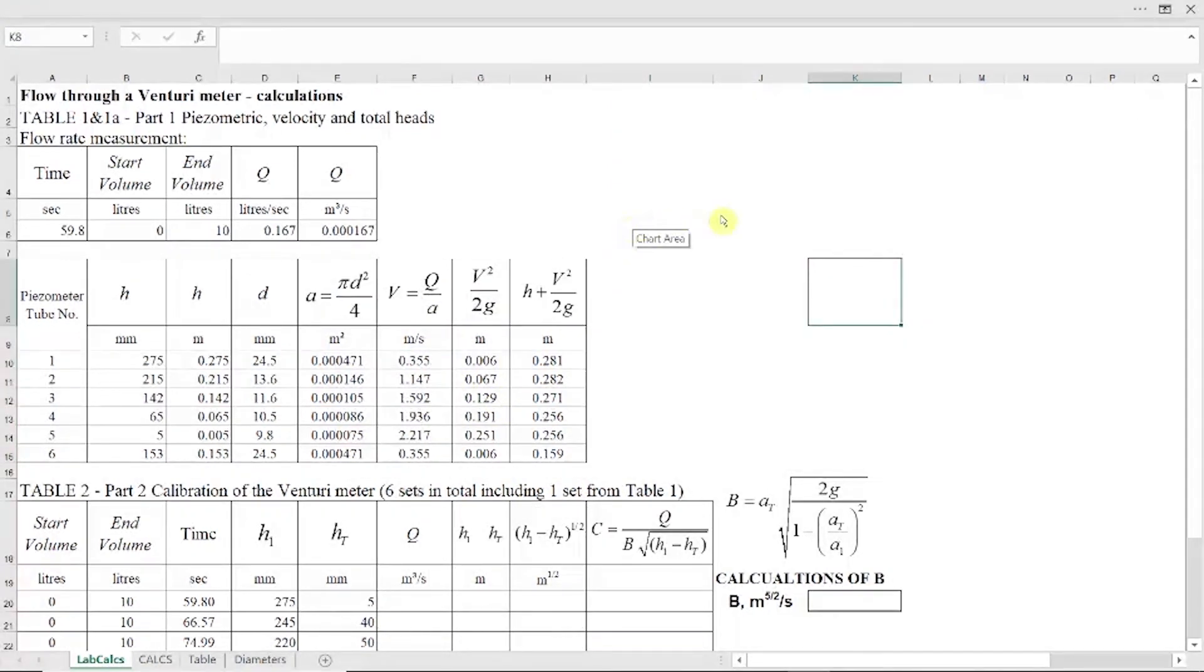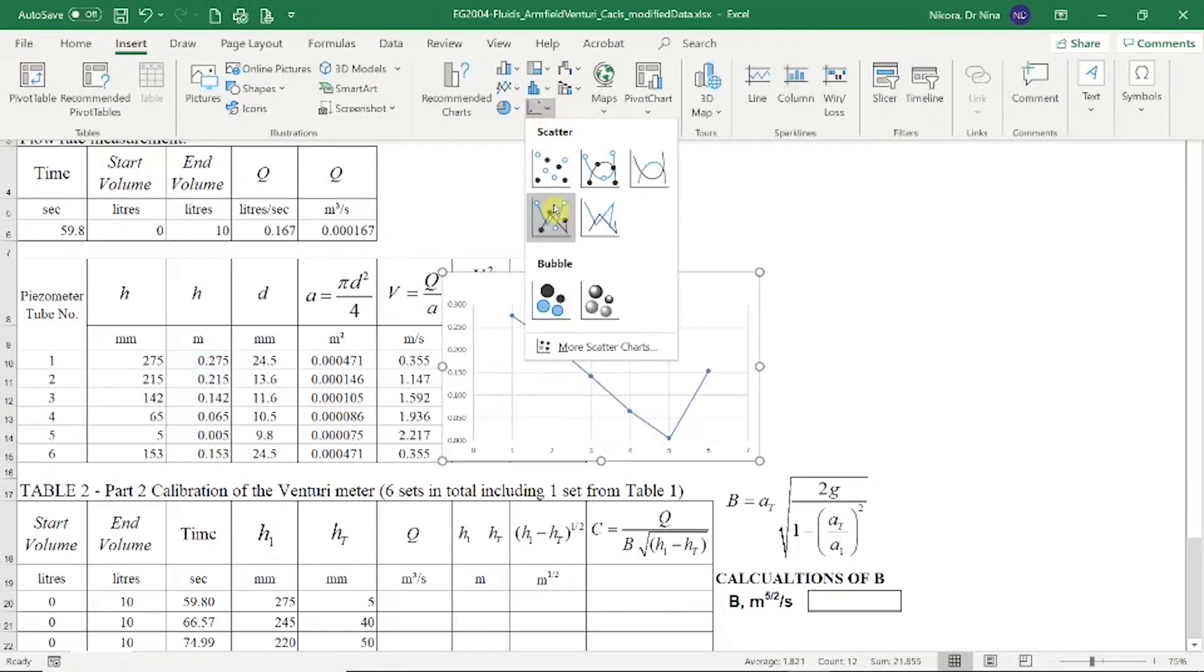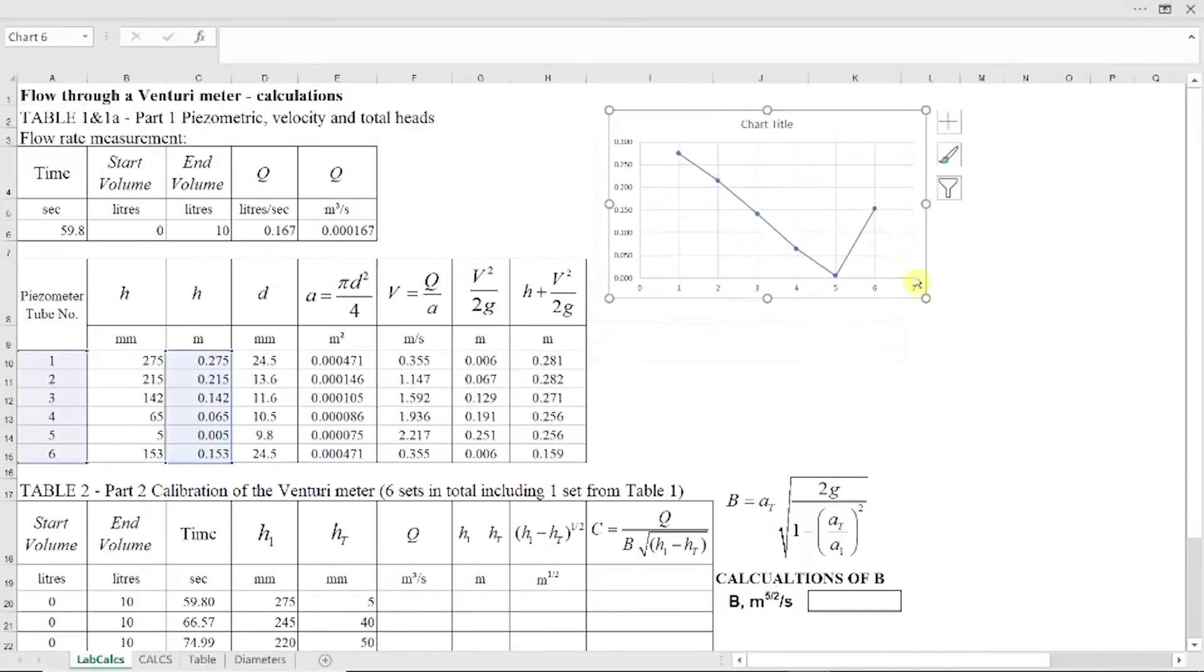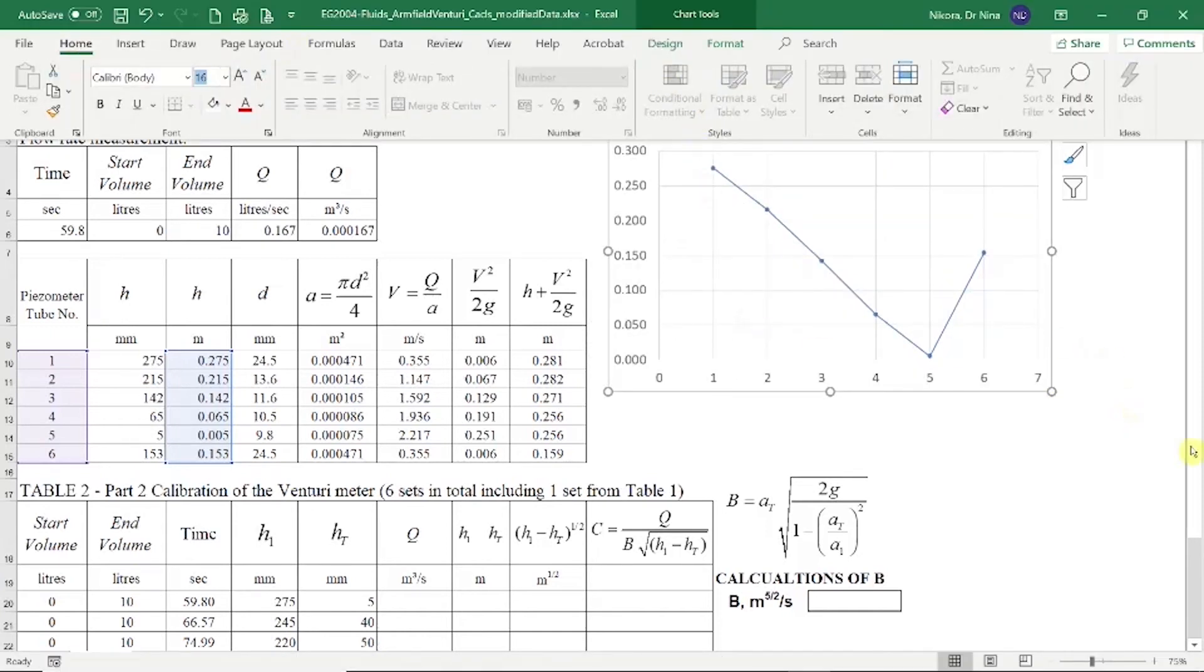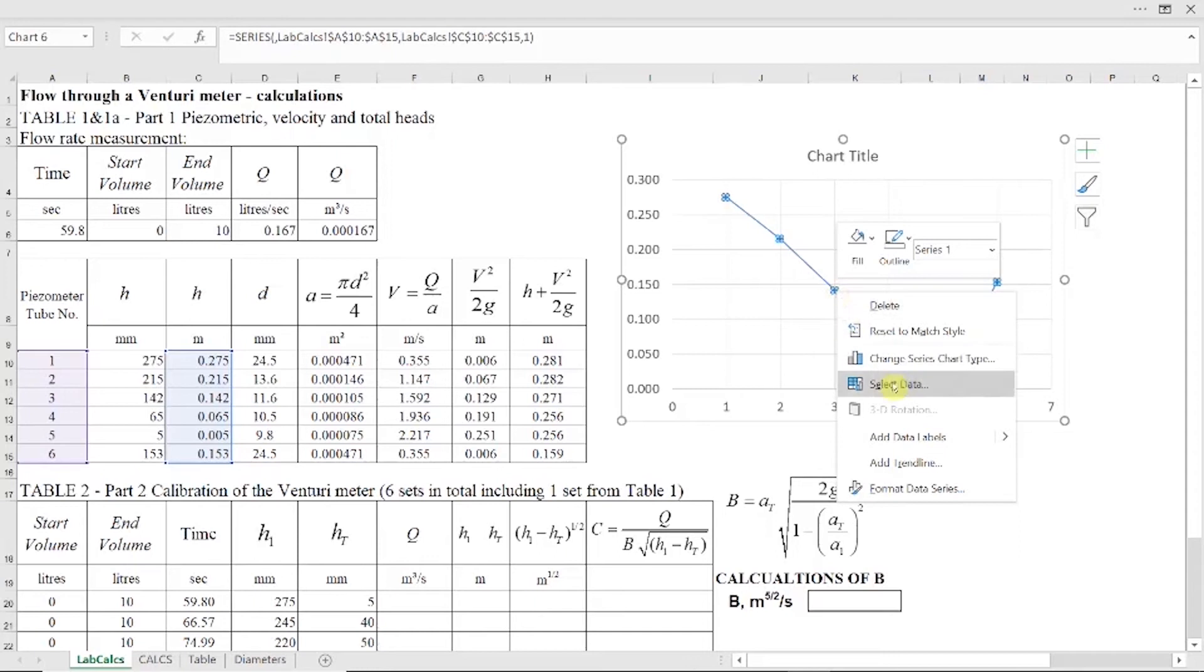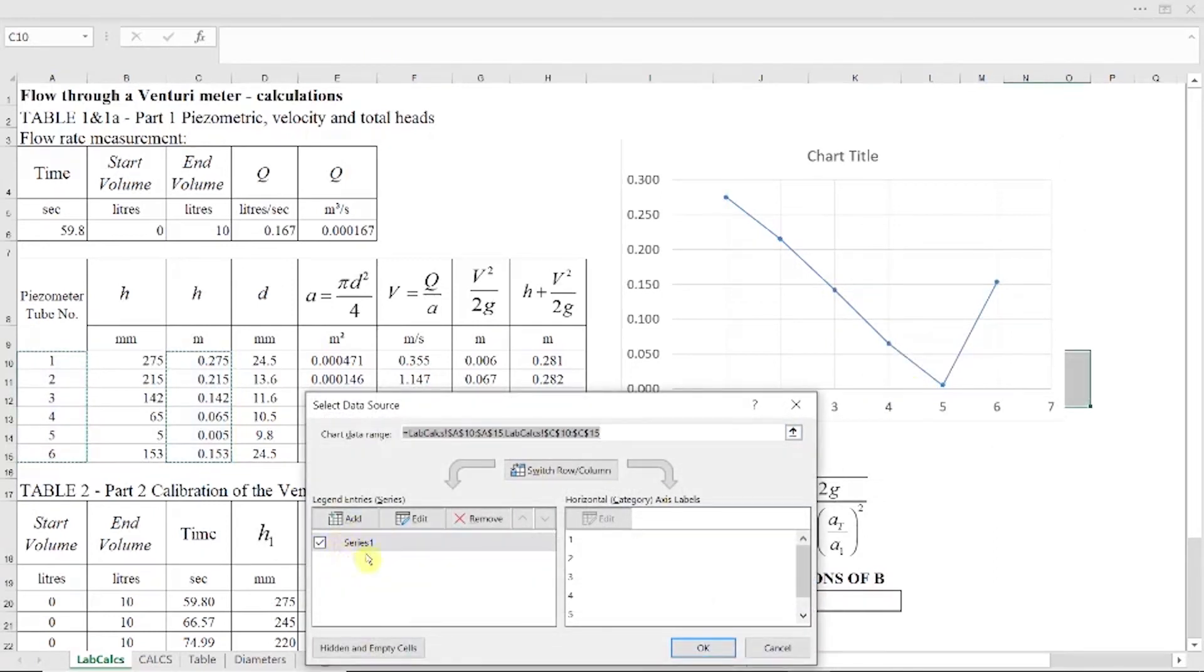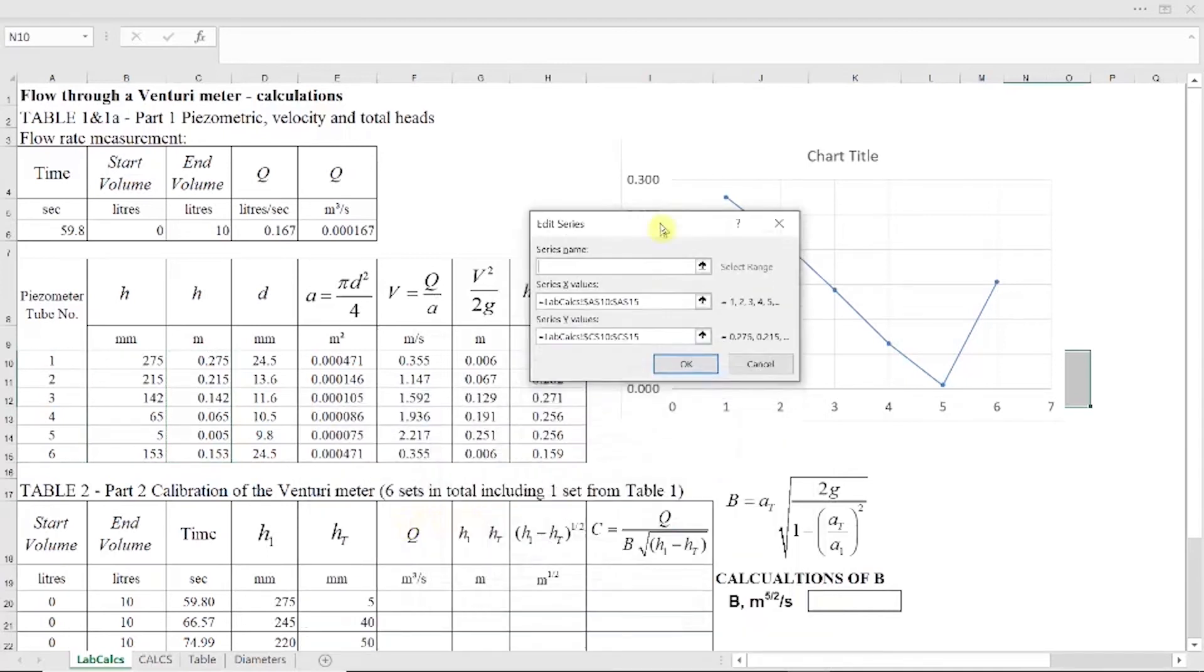Now we need to plot variation of piezometric velocity and total heads along venturi meter. I don't have distances, so I will just use tube number. So you select tube number, then pressing and holding down Ctrl key, you select piezometric head, and then we will plot insert, and we choose scatter, XY scatter. I will make this plot a little bit bigger. I will deal with formatting later. I would like to plot now my velocity head. To plot velocity head, I click on the line on the plot, and I click select data. And first of all, I would like to add time series name, which I click edit, and then I click piezometric. I type piezometric head. And I click enter.